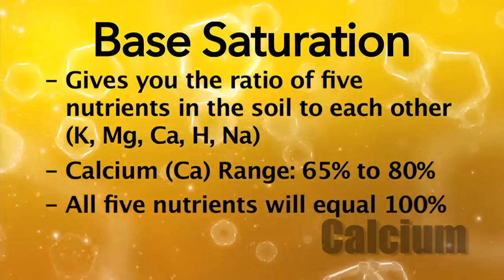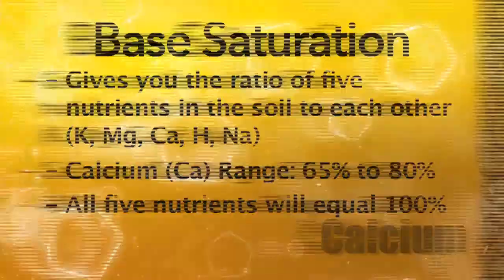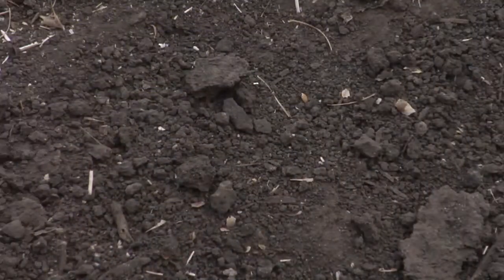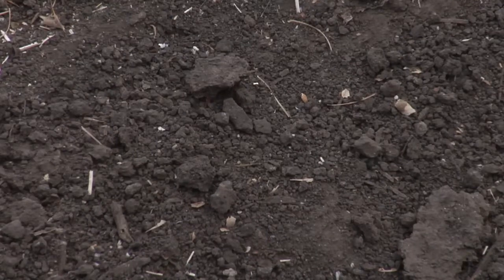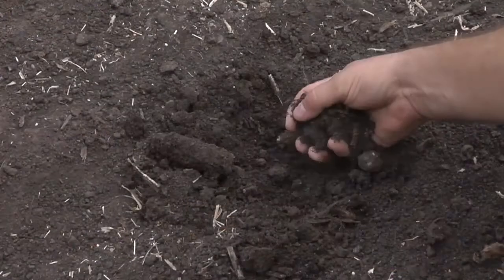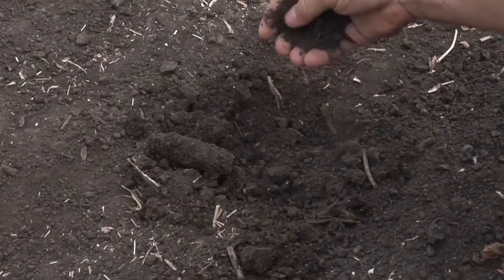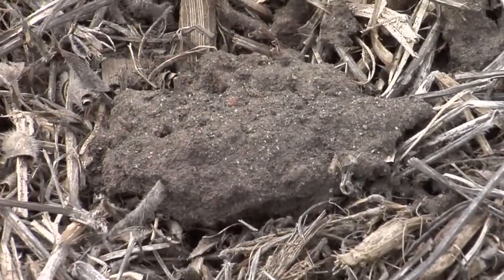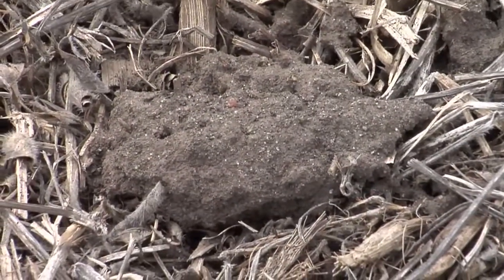Those five nutrients add up to 100% in base saturation. So if you're drastically low in calcium — let's say it's at 50% — there has to be the other 50% in those other four nutrients. You could be very high in sodium, very high in magnesium, or it could be hydrogen or potassium. When you have those others that are high, you might think, 'I'm high in these others, so I've got this problem too.' But most of your problem is that you're low in calcium.